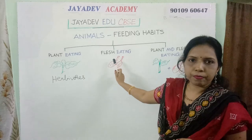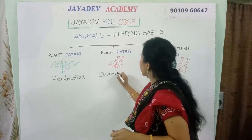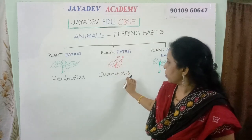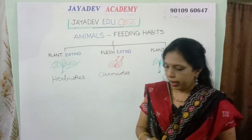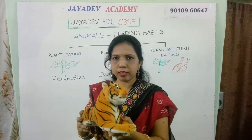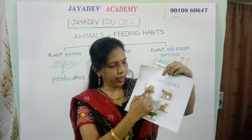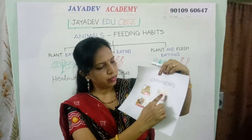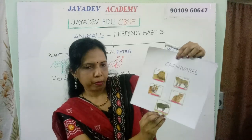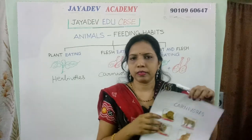The next type is flesh-eating animals. These are also called carnivores. The animals that eat the flesh of other animals are called carnivores or carnivorous animals. Here are some examples: lion, tiger, leopard, cat, and hippopotamus. All these are carnivores — they eat the flesh of other animals.